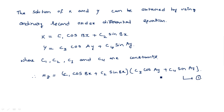This Hz equation is where we need to apply boundary conditions to calculate the four constants C1, C2, C3, and C4. Once we determine those constants, Hz is fully known, and from that we will derive Ex, Ey, Hx, and Hy using standard notations. Boundary conditions will be explained in the next video.